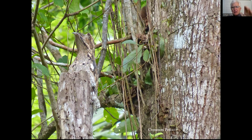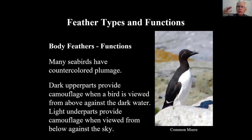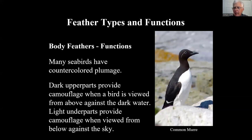There's also counter-coloring. This common murre, like all alcids, typically has a white underside versus a dark upper side. Why? If a predator is underneath looking up toward the bright sky, it sees a white belly against a bright sky. If it's looking down from above at the bird against dark water, it sees the dark back against dark water. So it's counter-coloring for camouflage.